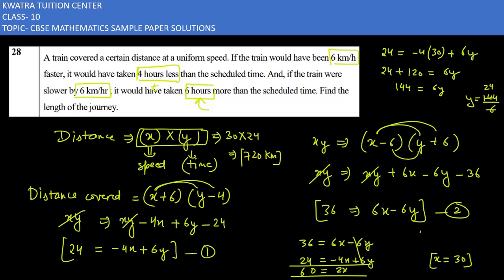So yes, they are saying now find the length of the journey. Length means distance, so you have to find the distance from x into y. So it is 30 into 24, and 30 into 24 is 720 km. So yes, it is the length of the journey they have to cover. Just make your equations and solve it so that you can get the value of x and y.